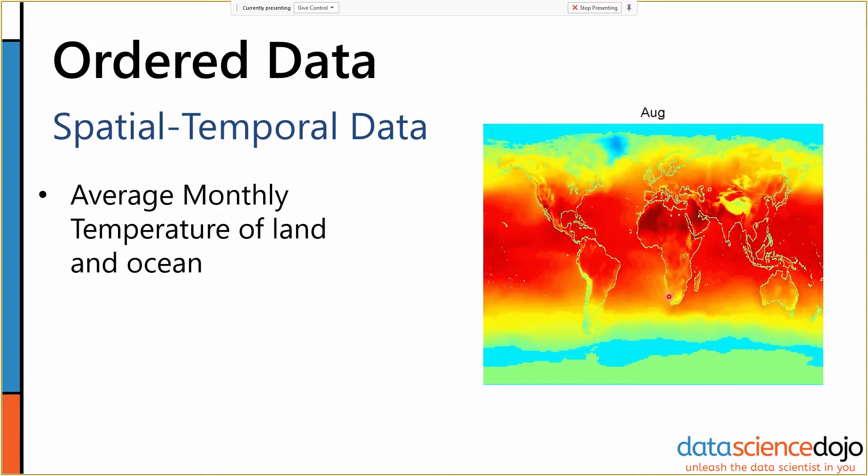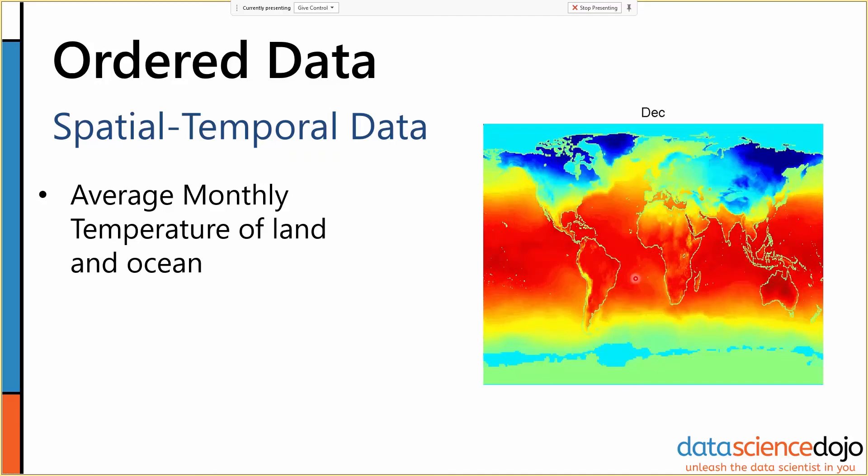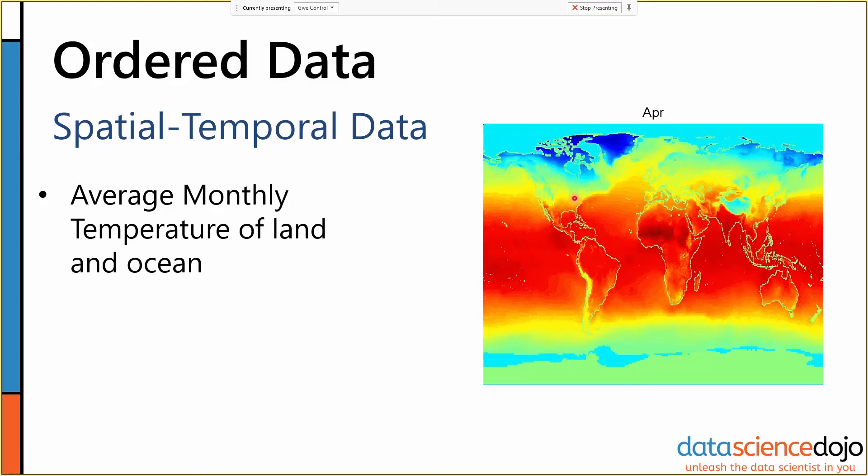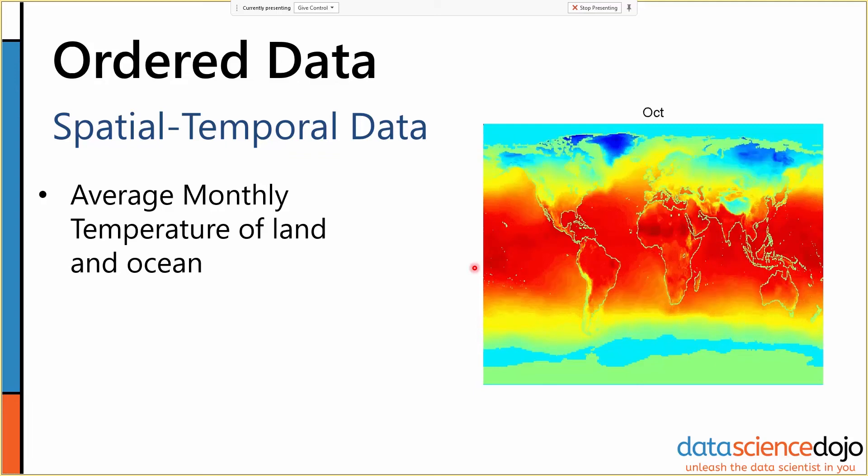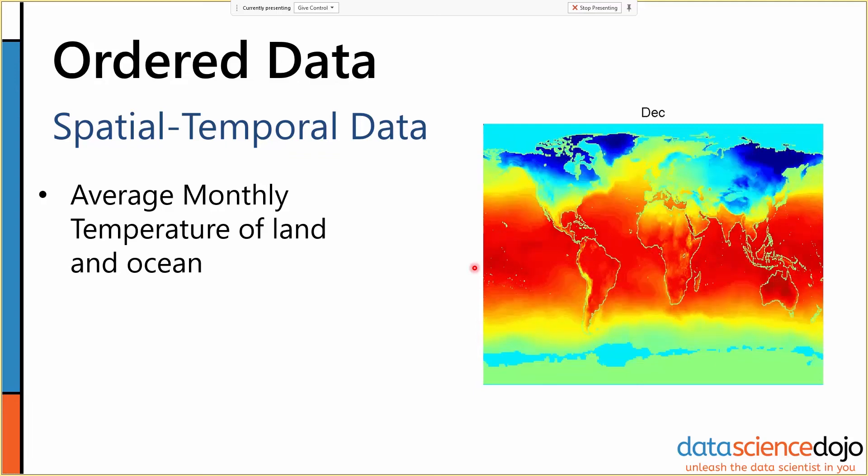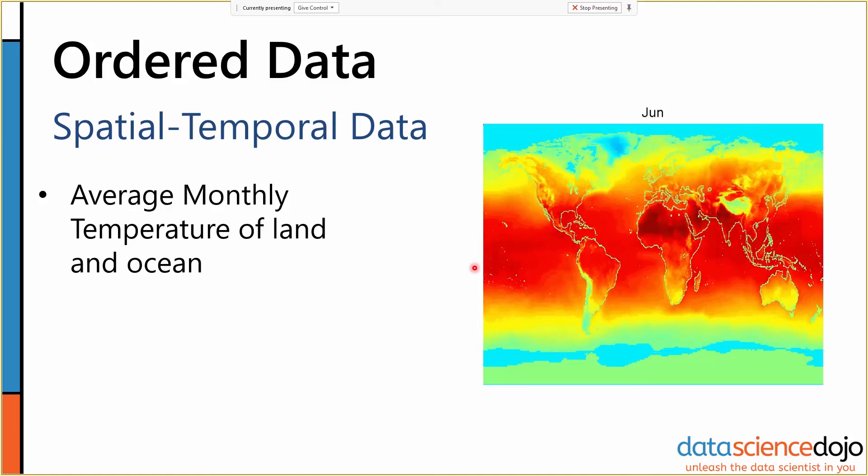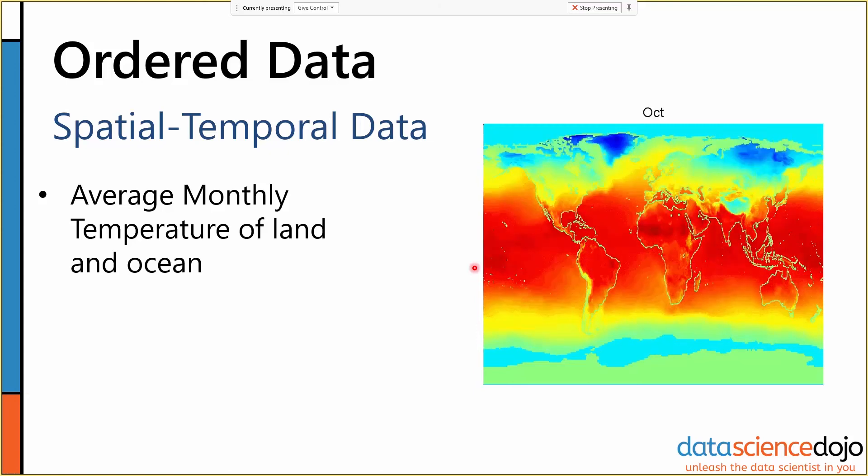In this case, the spatial aspect of the data is important. Where we are in the world certainly matters when we're looking at a data object. If we were getting this data, every row in a database table might have a location associated with it and a time. There's an implicit ordering there, both especially to the time, but also to the location. So when we're handling ordered data, we have to be very careful about it.